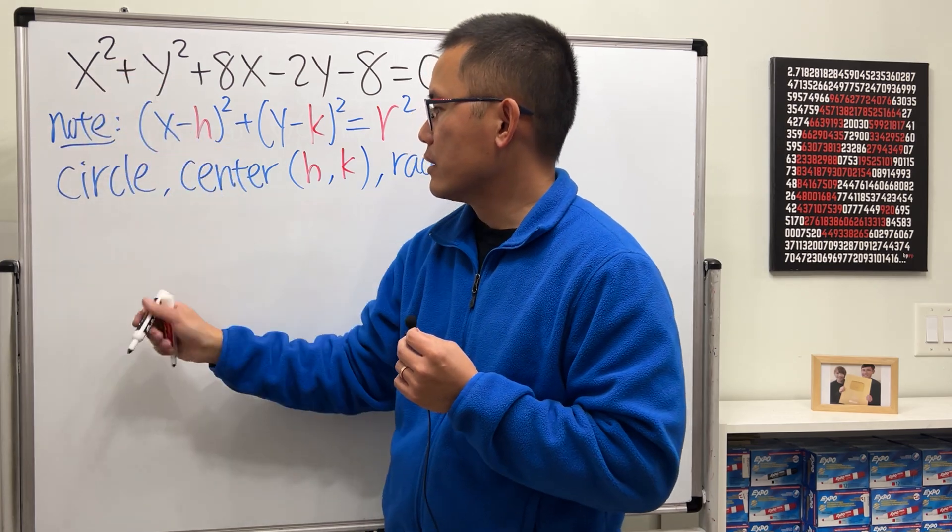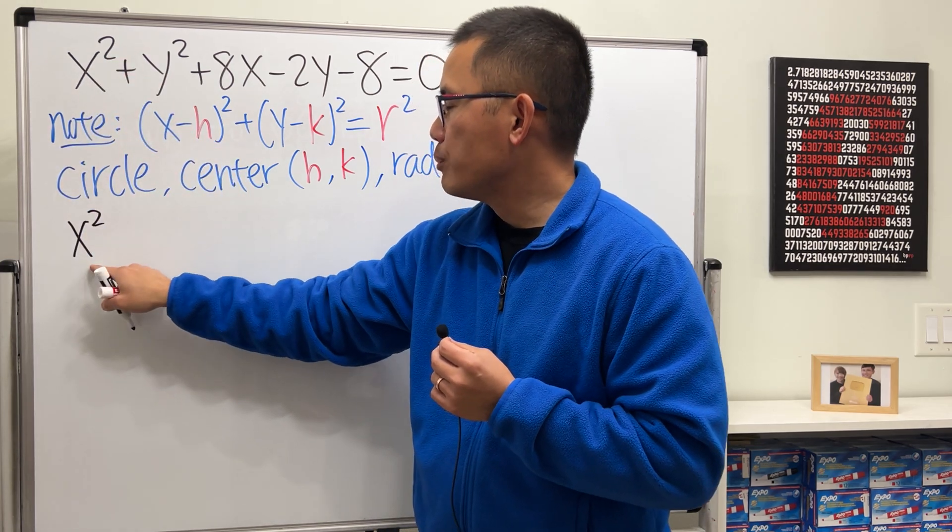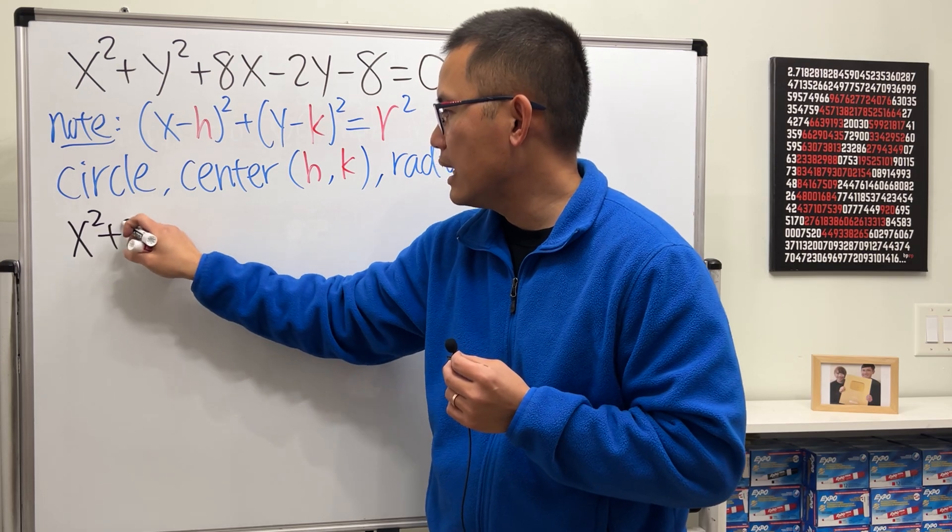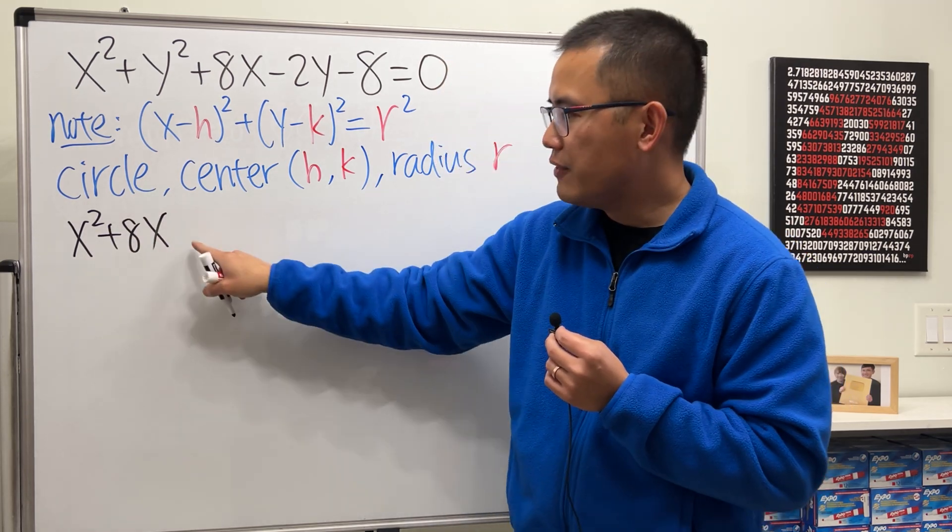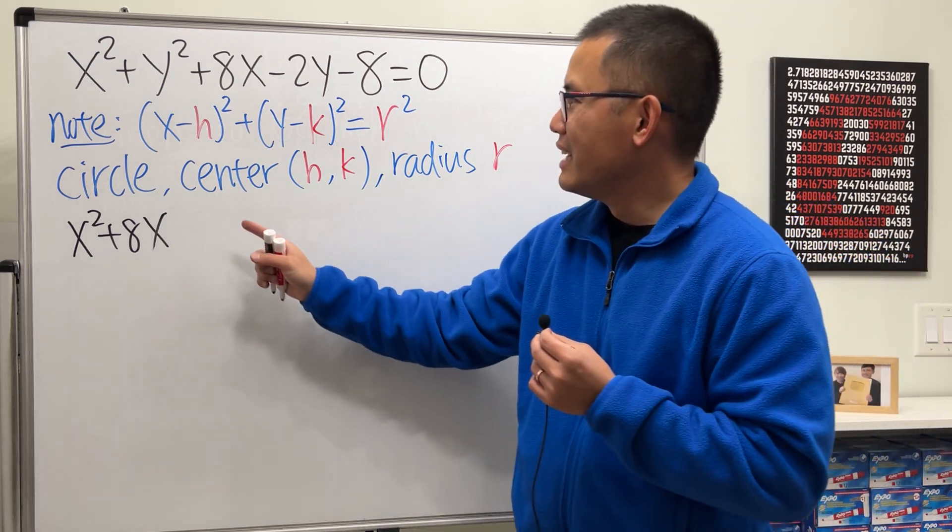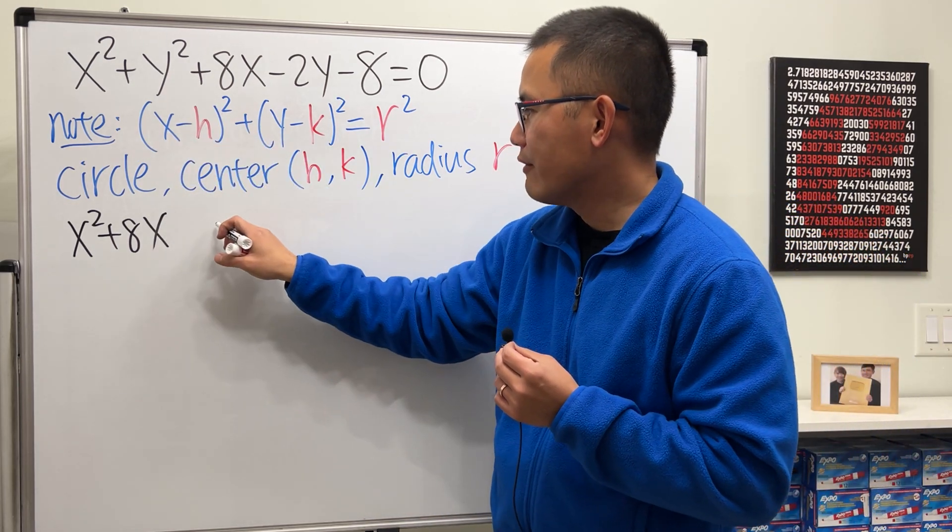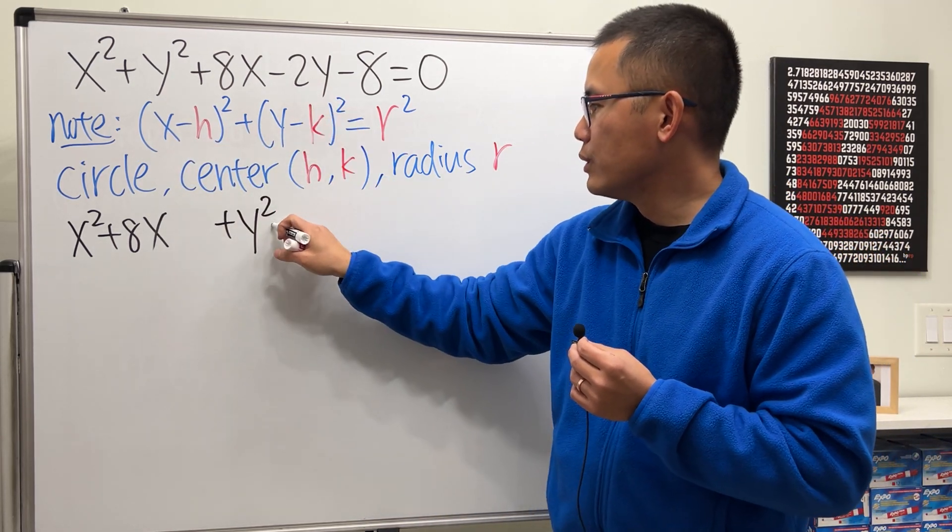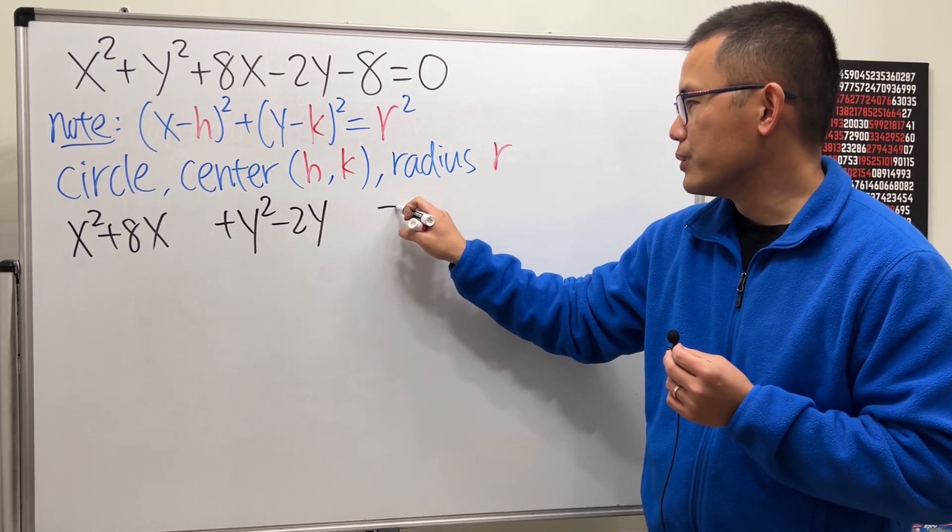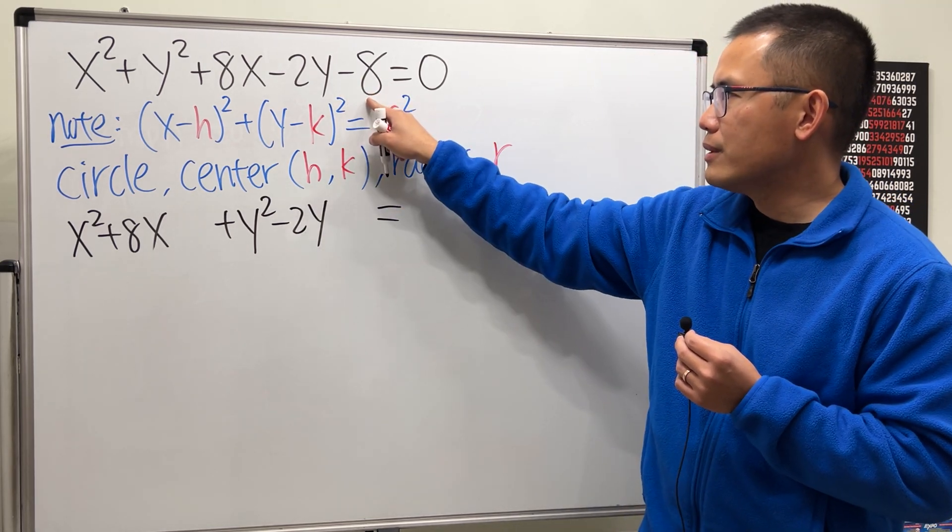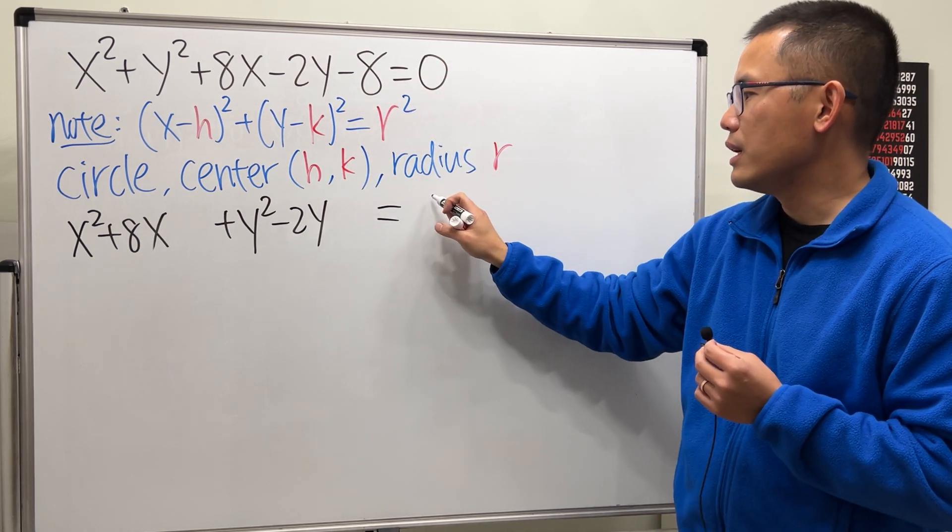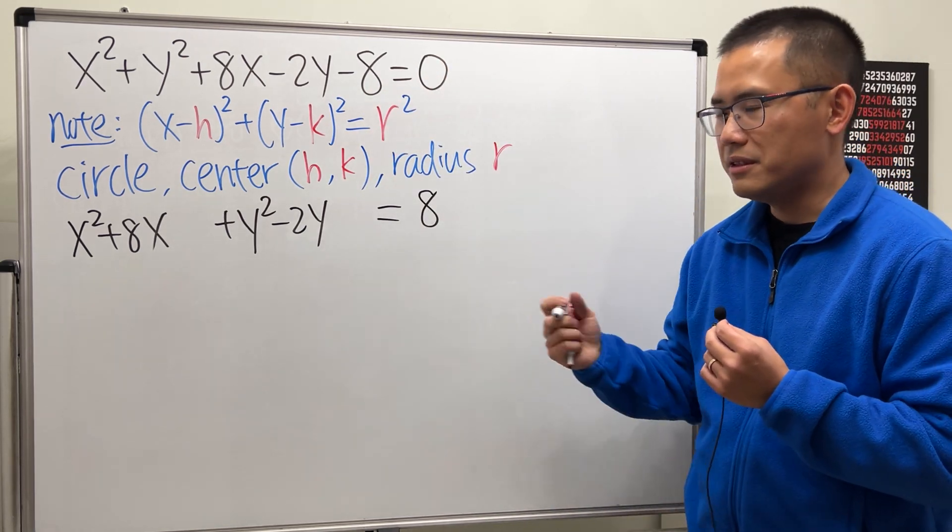First, we have x². I'm going to put this together with the next x, which is the 8x, so plus 8x. And then leave a space, because we are going to use the magic number. Then, continue, we have the y², and then put together with minus 2y, and then leave a space here. And that's equal to, when we have a number, move that to the other side, just add it to both sides, we get 8. So this is how we get ready.